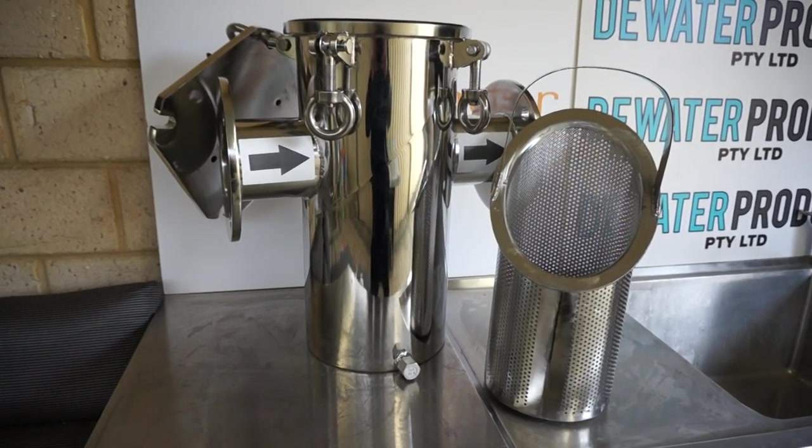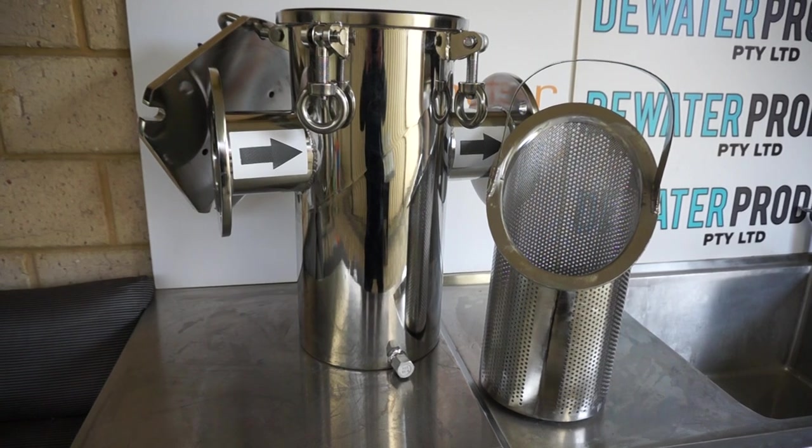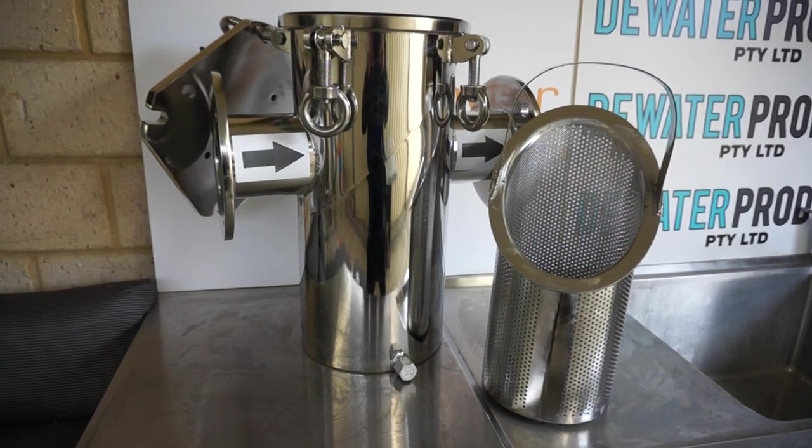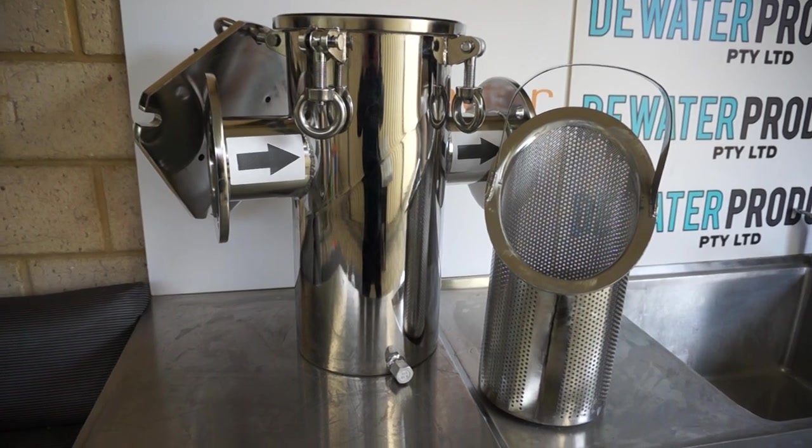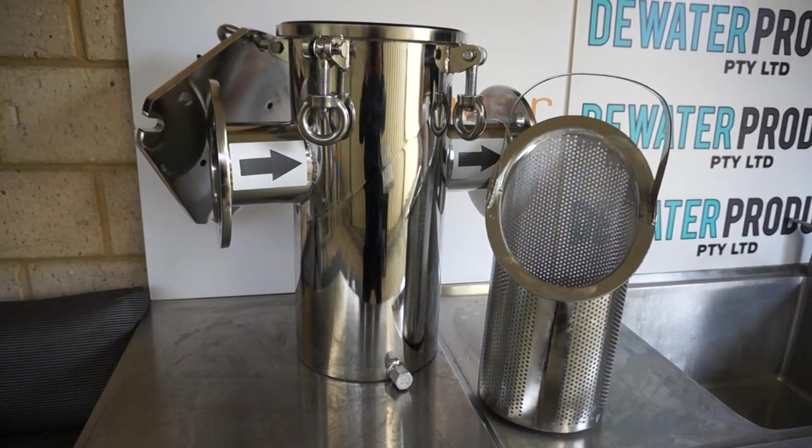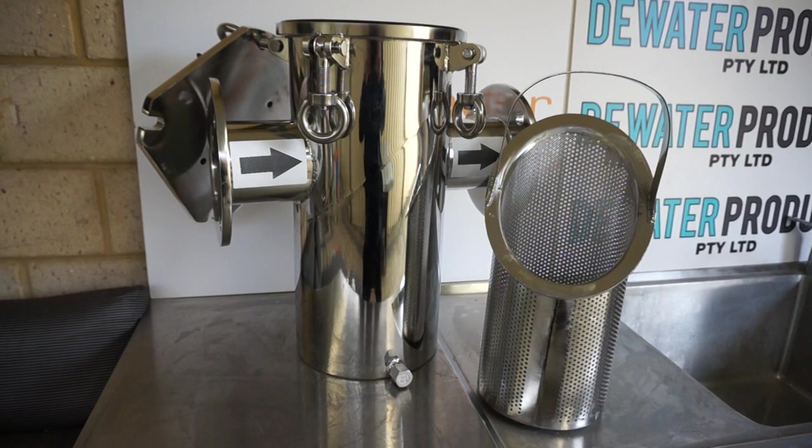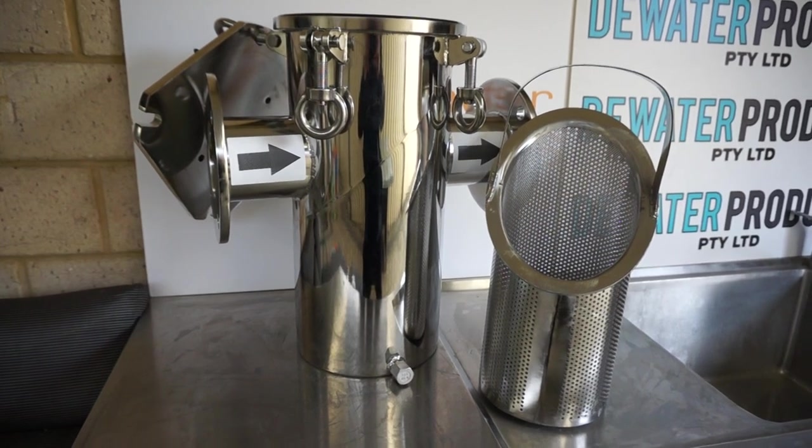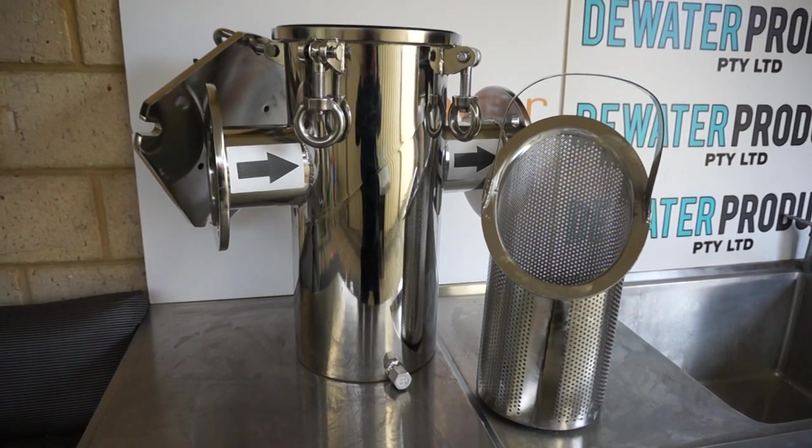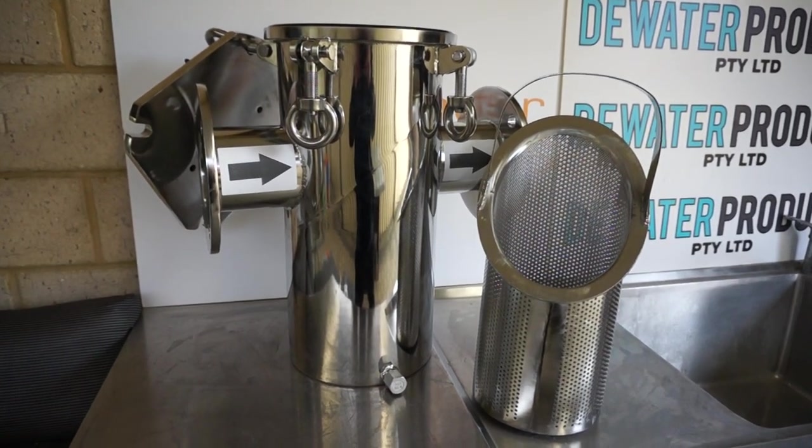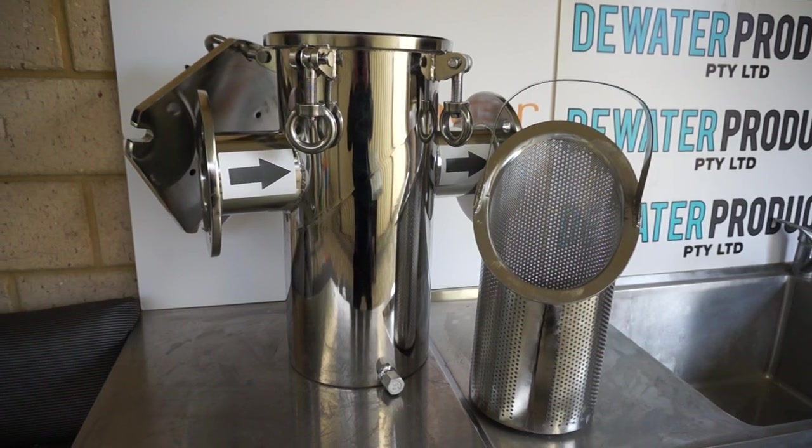Hi, so here we have a DN100 table D flanged simplex basket strainer in full 316 stainless steel. This is not a cast 316 stainless steel basket strainer, so it's not made by investment casting or anything. It's a fully fabricated 316 stainless steel basket strainer.